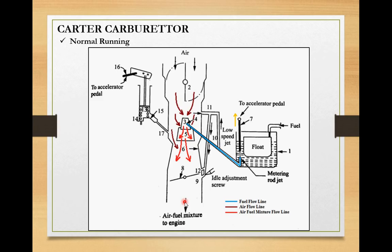When you have a normal running condition with gradual acceleration, a metering rod is connected to the accelerator pedal. When gradually accelerating, the metering rod is raised, increasing the opening area of the metering rod jet, which allows more fuel to flow to jet number 4. When you are decelerating, the metering rod is lowered, decreasing the opening size and reducing the amount of fuel flow. This is how the carburetor works under normal running conditions.